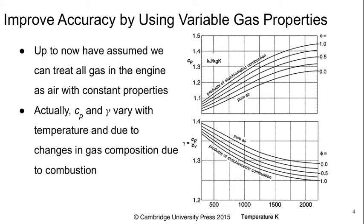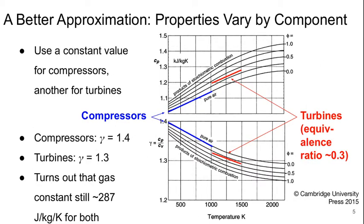One of the things we're going to do in these next couple of chapters is improve the accuracy of our analysis by using variable gas properties. Up to now we've assumed that we can treat all the gas in the engine as air with constant properties, but actually CP and gamma vary with temperature and due to changes in gas composition due to combustion, as you can see here. So a better approximation is to assume constant gas properties within a certain component but allow them to vary from one component to the next.